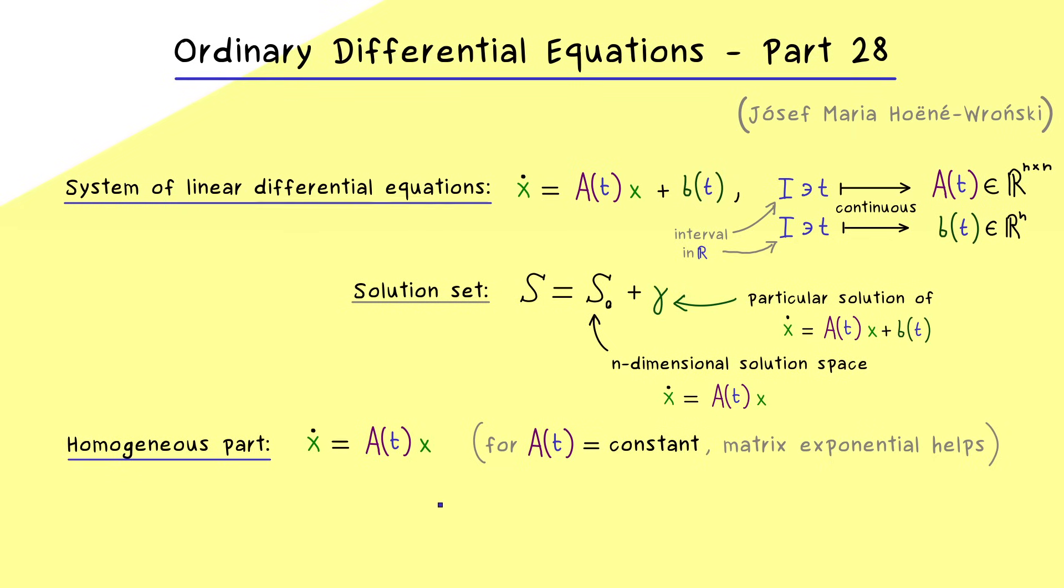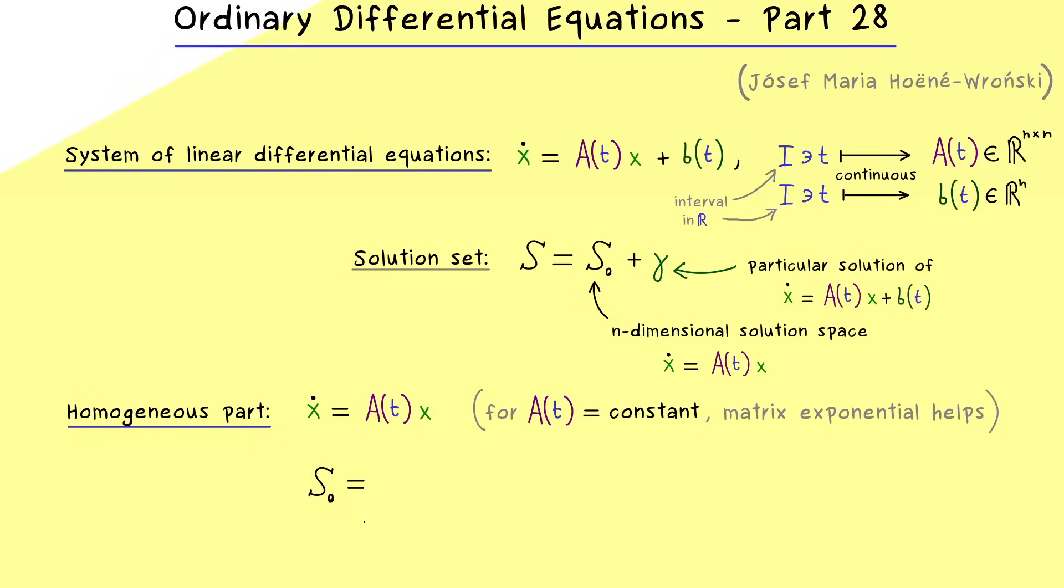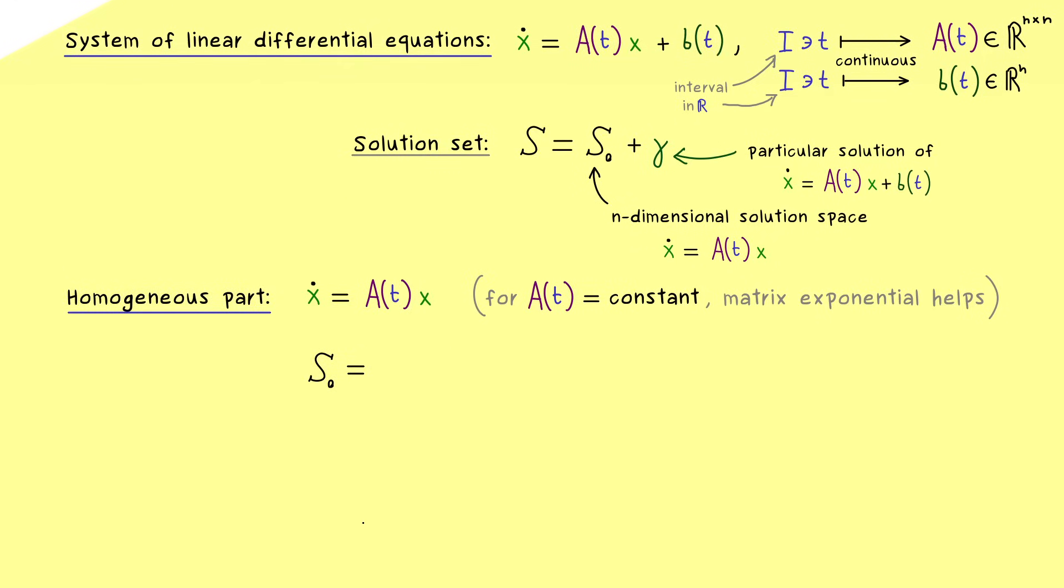But still, in the general non-autonomous case, we know that we can find n solutions that span the whole solution space. So we can always formulate S₀ as the span of n solutions. This also means that the solutions α₁, α₂, and so on should be linearly independent.